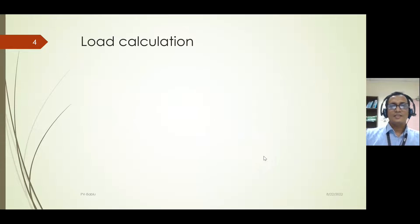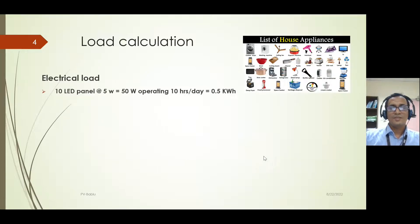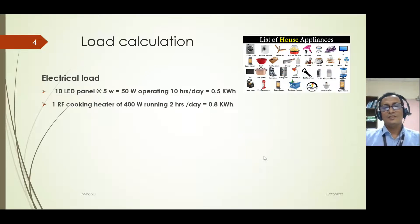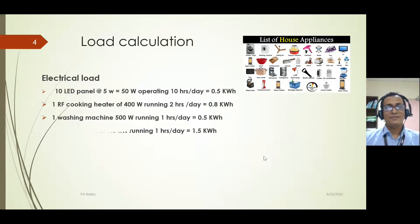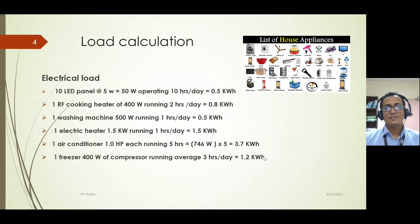The first step is load calculation — how the household will be supported by the panel installation to provide power for the grid-connected PV system. For this household the appliances are: 10 LED panels consuming 0.5 kWh, an RF heater for cooking at 0.8 kWh, a washing machine at 0.5 kWh, an electric heater at 1.5 kWh per day, an air conditioner at 3.7 kWh per day, and a freezer of 400 W capacity running efficiently at 1.5 kWh per day. Total electrical consumption is around 8.2 kWh per day.